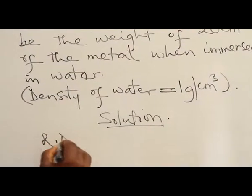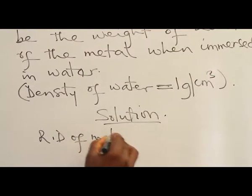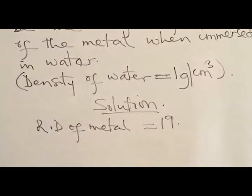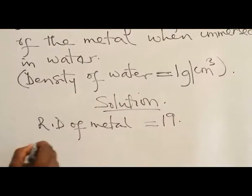Relative density of metal is 19, so we need to get the actual density.